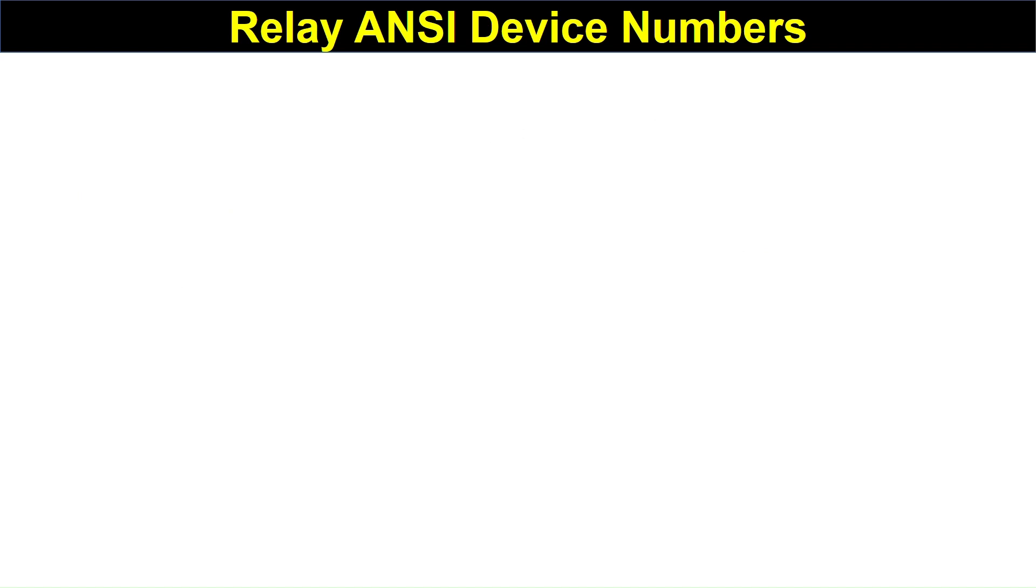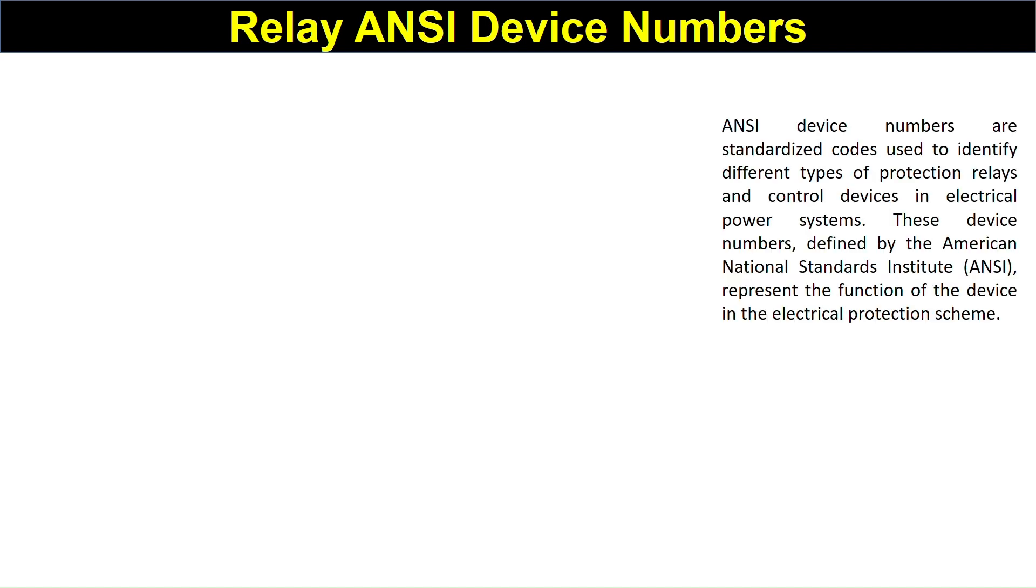Relay ANSI device numbers. Each relay has been given a standard number so that we can identify with this number what is the relay or what is its function. The numbers are called ANSI numbers or ANSI device numbers. ANSI device numbers are standardized codes used to identify different types of protection relays and control devices in electrical power systems. These device numbers, defined by the American National Standards Institute, represent the function of the device in the electrical protection scheme.